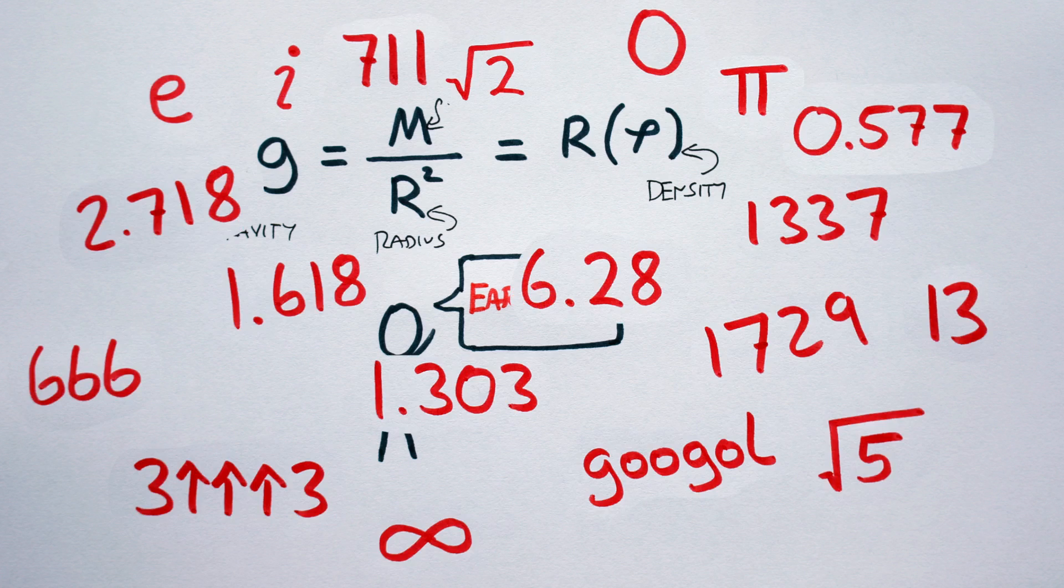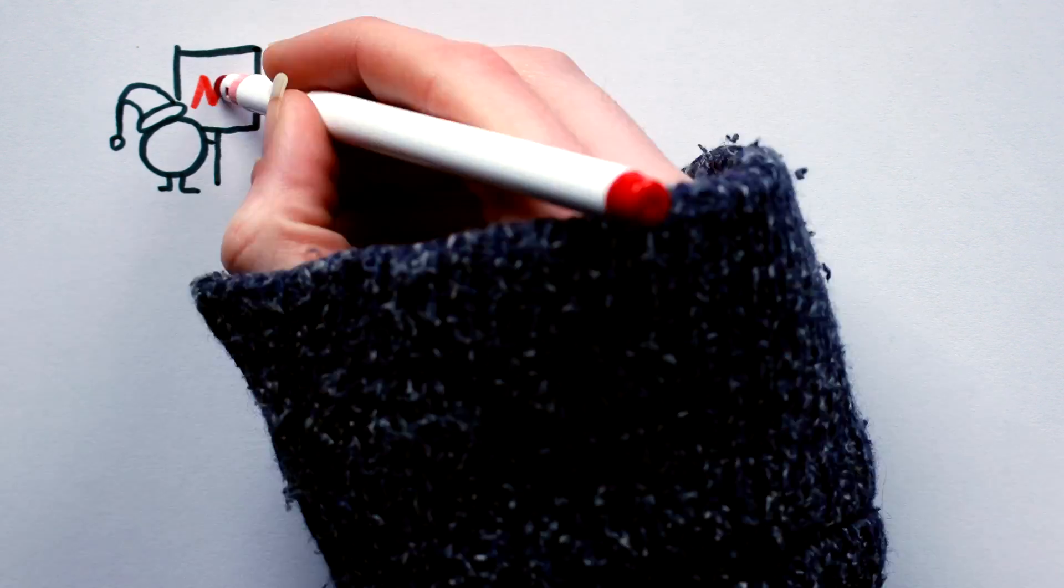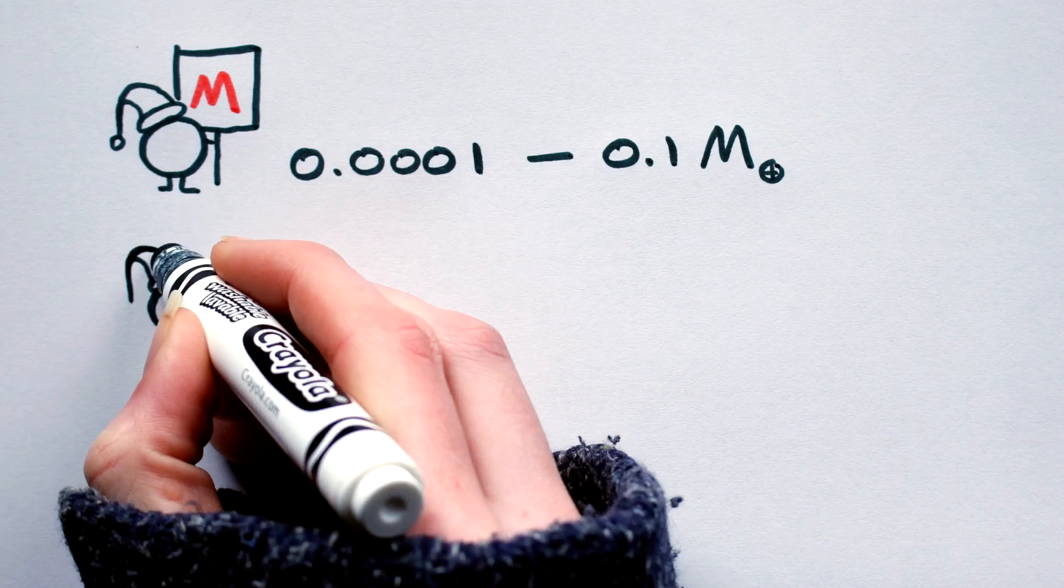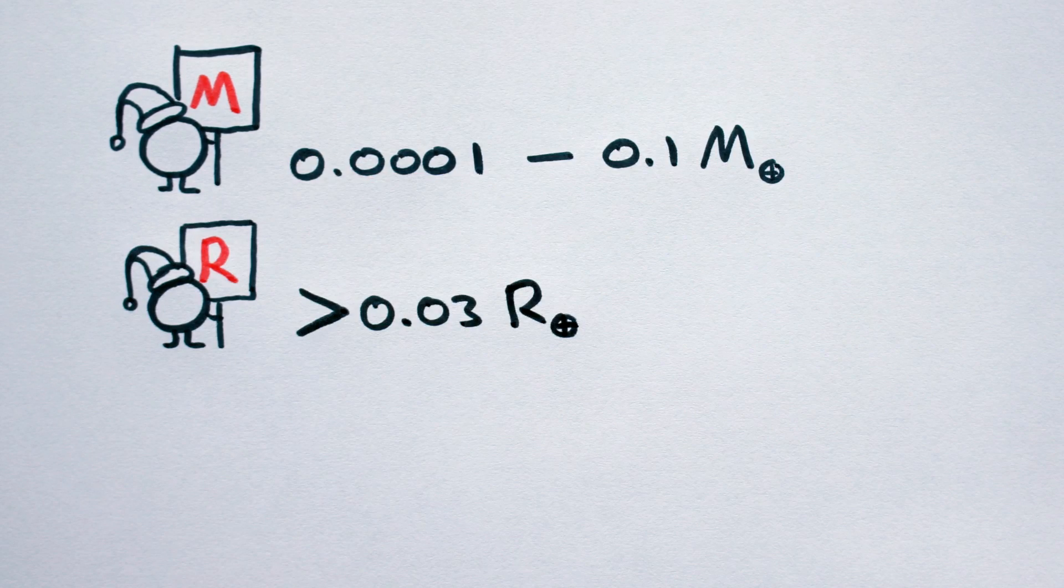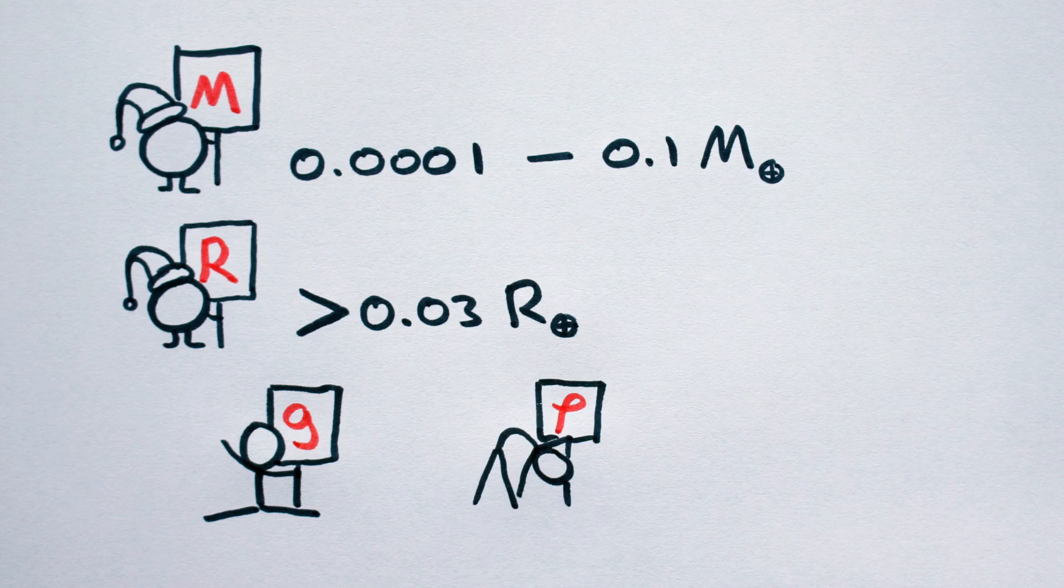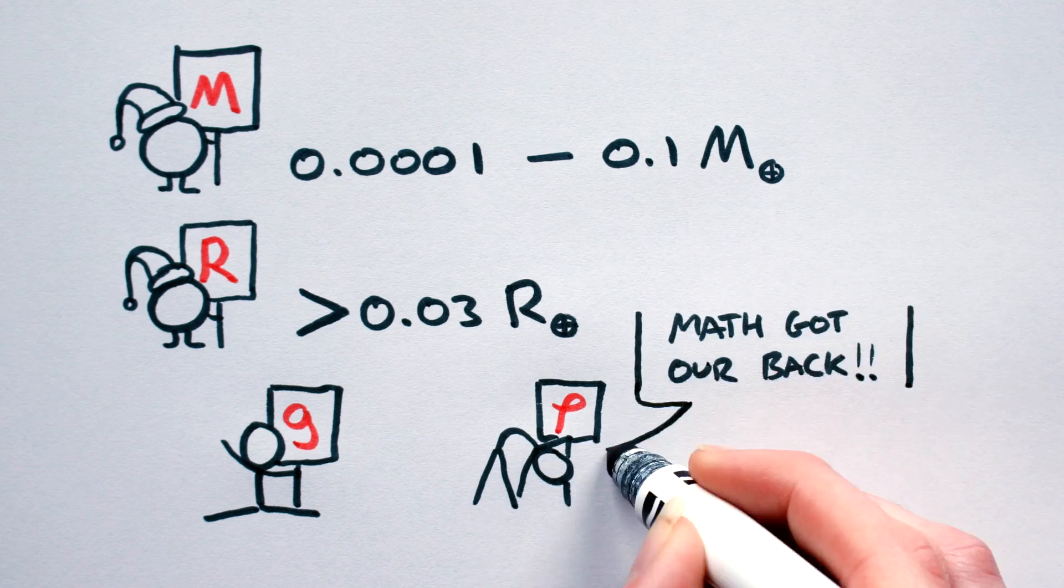Now, before we go throwing numbers at this equation, let's talk ranges for a second. The mass range for dwarf planets is 0.0001 to 0.1 Earth masses, and their radii should be greater than 0.03 Earth radii. The values for density and surface gravity are more flexible, and we can let the equation determine them.